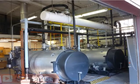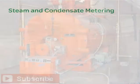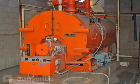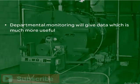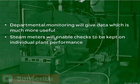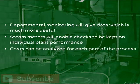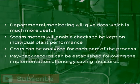All too often, when the need for a steam meter is accepted, only central monitoring — for example in the boiler house or a major plant room — is carried out. Monitoring at branch mains, at each plant room, a section of the process, or major pieces of steam-using equipment are not considered. While central monitoring will establish overall steam flow figures and thus costs, departmental monitoring will give data which is much more useful. Such steam meters will enable checks to be kept on individual plant performance. Costs can be analyzed for each part of the process, and payback records can be established following the implementation of energy saving measures.